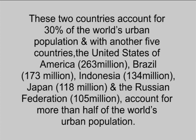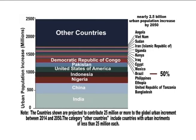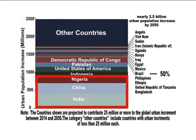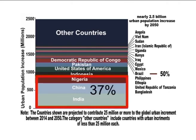Together with another five countries — the United States of America (263 million), Brazil (173 million), Indonesia (134 million), Japan (118 million), and the Russian Federation (105 million) — they account for more than half of the world's urban population. China, India, and Nigeria are projected to account for 37% of the increase, nearly 2.5 billion people, in the urban population by 2050.